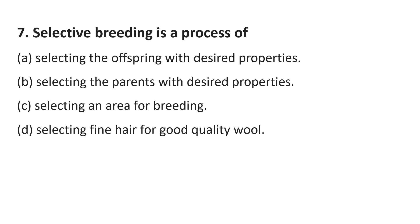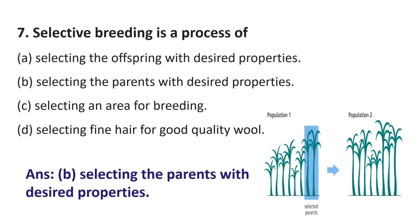Question number 7. Selective breeding is the process of: Option A, Selecting the offspring with the desired properties; Option B, Selecting the parents with the desired properties; Option C, Selecting an area for breeding; Option D, Selecting fine hair for good quality wool. The answer is Option B, Selecting the parents with the desired properties. We have to select the desired properties of parental animals or plants to provide good yield and good quality products.